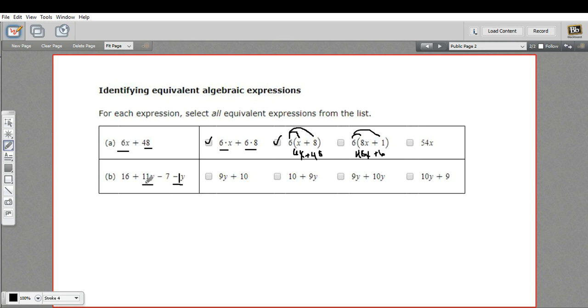So if I have 11y minus 1y, that would be 10y to combine those. So I've combined these two terms. And then I have 16 minus 7. Well, 16 minus 7 is a positive 9. So this would be 10y plus 9. So that's what we're dealing with here.